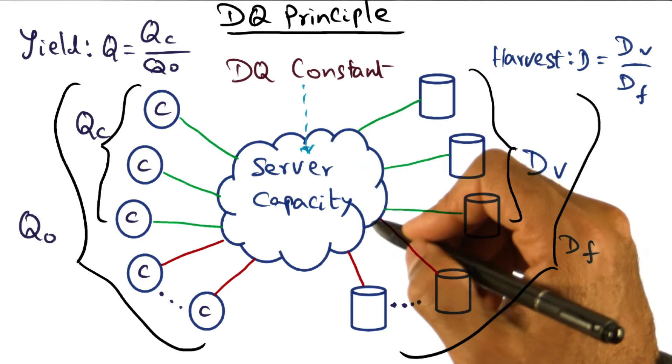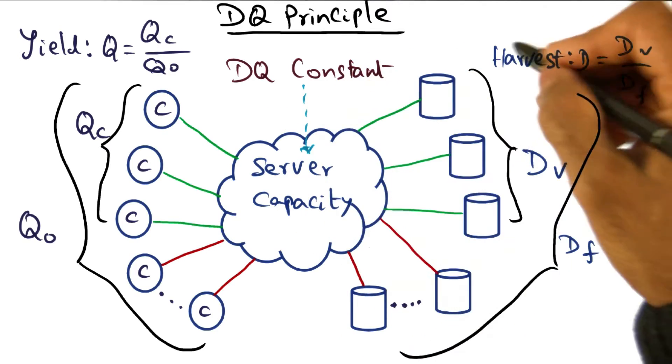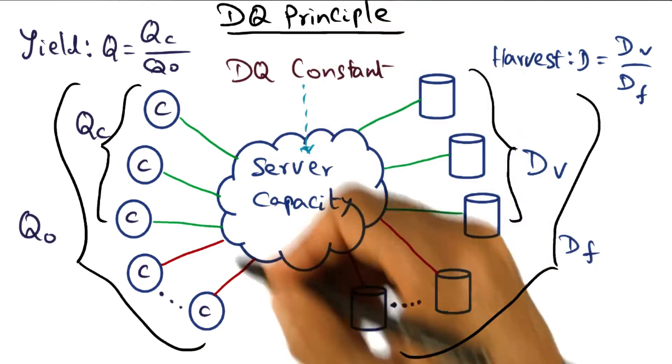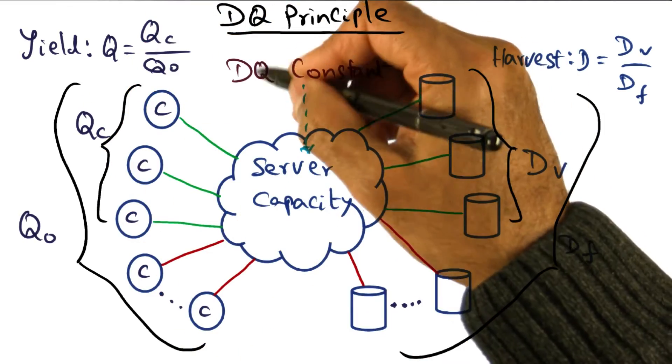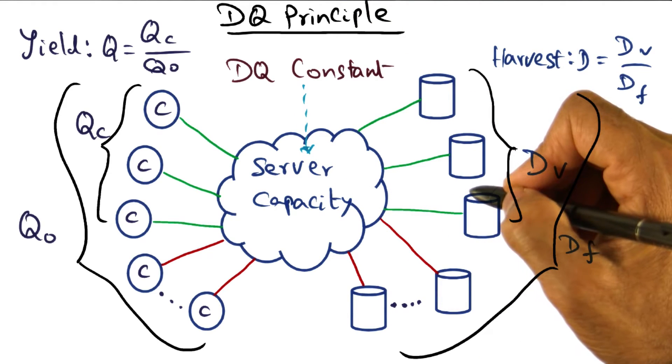So if we increase the capacity of a server, we have a choice as a system administrator. We can either increase the harvest keeping the yield the same, or we can increase the number of clients we are serving—that is, we can increase the yield keeping D constant. That's the knob that a system administrator can play with in terms of dealing with capacity increases at the server.